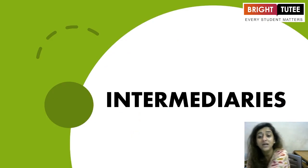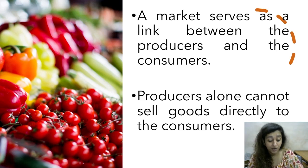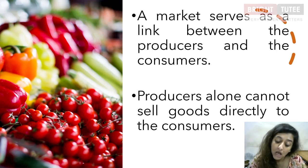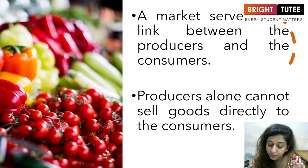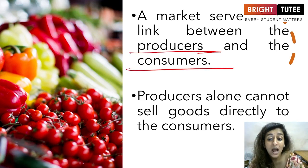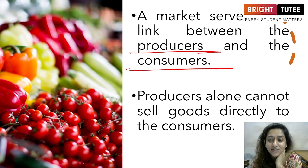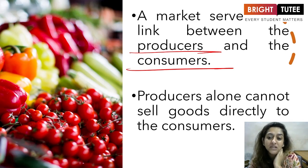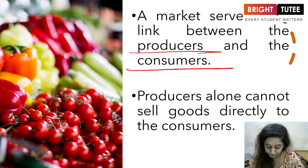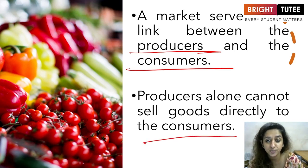What do we understand by intermediaries and what are their roles? A market serves as a link between the producer and the consumer. The more the public wants to consume, the more the producer will have to manufacture, and the balance between these two must be maintained. Producers alone cannot sell goods directly to all customers — this is not always possible.